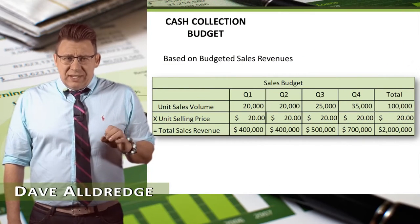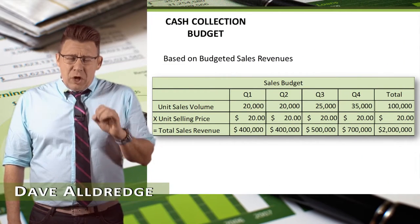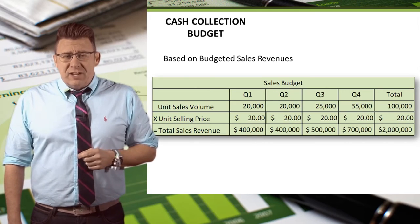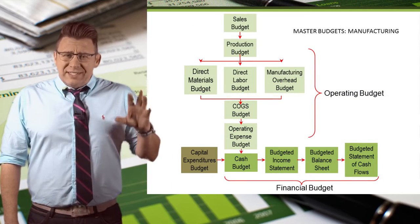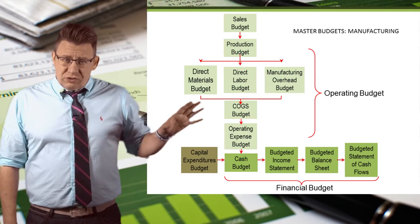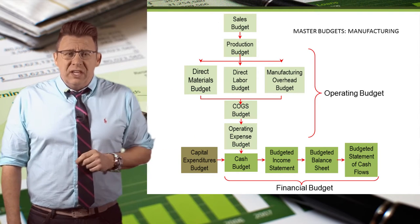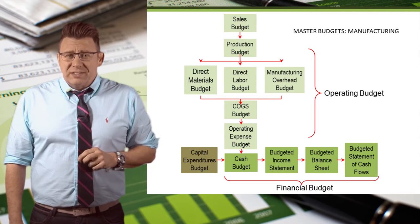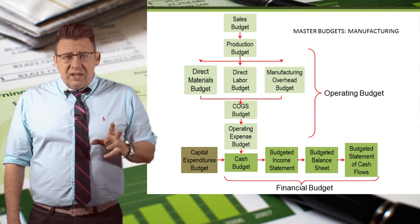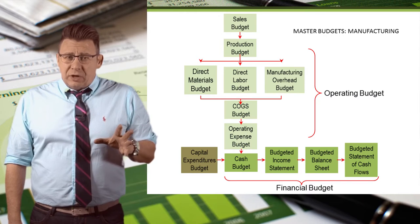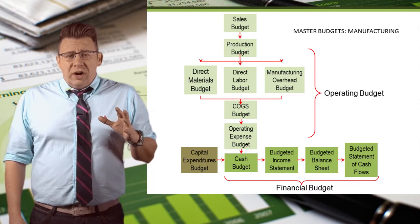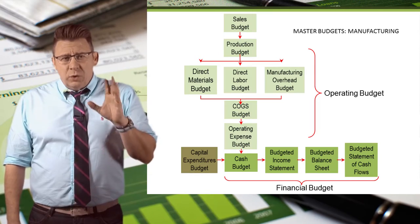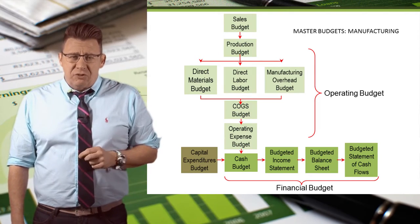The cash collections budget is a component of the cash budget and it is based on data from the sales budget. The cash collections budget, which is again part of the cash budget, is the ninth budget completed in the master budget process. This budget can be either done separately, or it can be done as part of the larger cash budget. Either way, we will use these results in the cash budget.